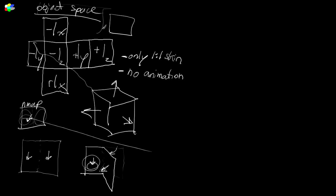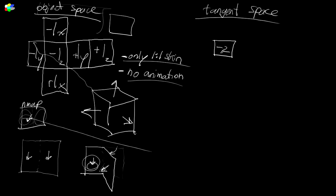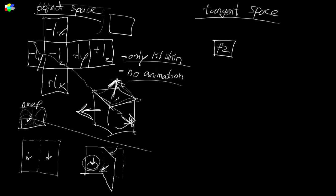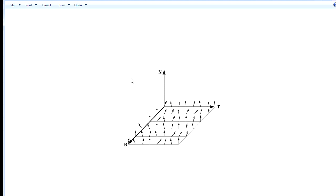So those are the major weaknesses of object space normal mapping: only one-to-one skins can be used and no animation. Tangent space, on the other hand, has vectors all pointing in really the positive Z direction, and those vectors are mapped onto the surface of the mesh using the surface normal. So it's reoriented based on the mesh normal. Instead of normal vectors being absolutes in object space, they are perturbations of the mesh's own normal at that point — the mesh normal is the baseline, and the normal map determines how much to deviate from it and in what direction.